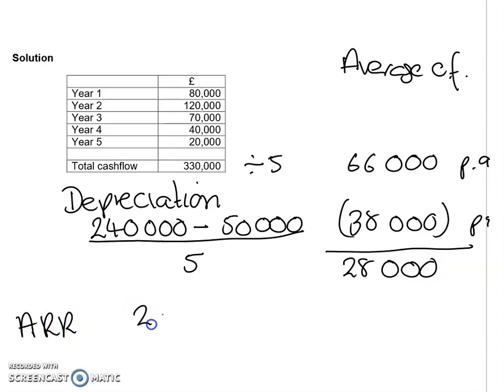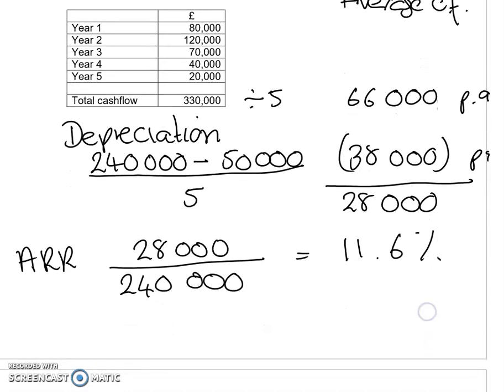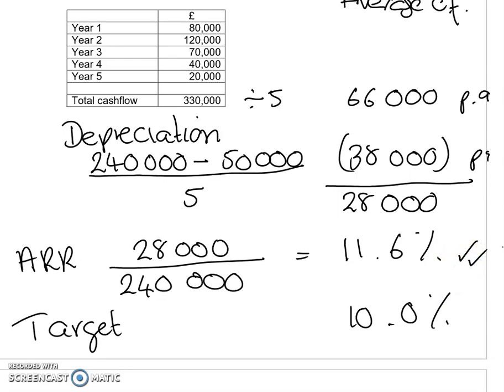The accounting rate of return is our average annual profit divided by our initial investment of two hundred and forty thousand pounds, which comes to eleven point six percent. On its own, eleven point six percent doesn't tell us much — we need to compare it to a target. Just as with the payback period, we compare the ARR to a target rate. If the target is ten percent, then this project exceeds it at eleven point six percent, and we would go ahead with it.